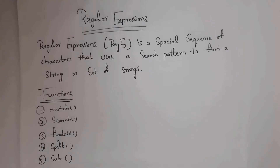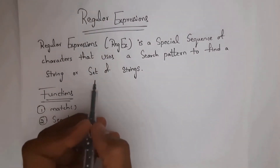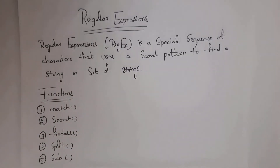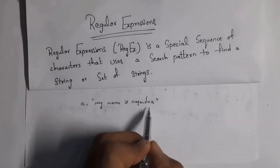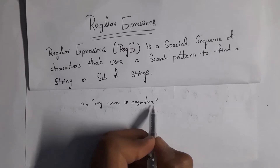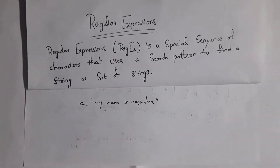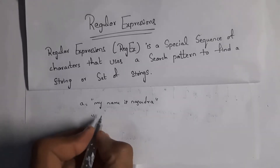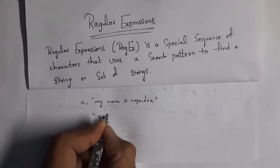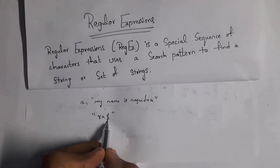Let's get started. Regular expressions — shortly we call it as regex — is a special sequence of characters that uses a search pattern to find a string or set of strings. For example, consider the string 'my name is Nagendra'. If I want to find whether 'ra' is present at the end or not, I apply a pattern. I write 'ra$' — the dollar sign is used to identify the last characters.